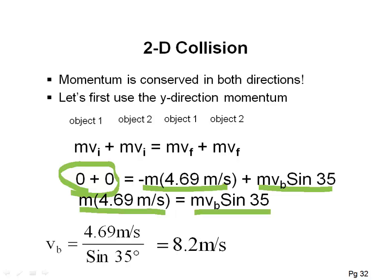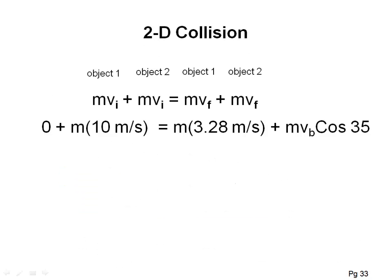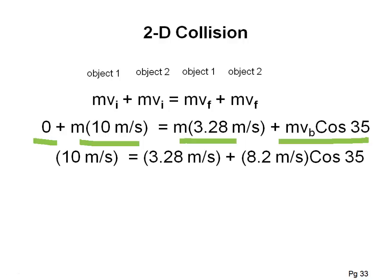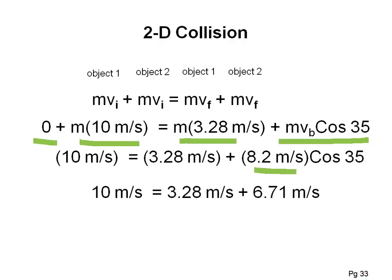You can also verify it works in the x direction: the green puck wasn't moving initially and the gray one was. Plugging in the new velocity of 8.2 m/s, the two sides of the x-direction momentum equation are equal, confirming conservation holds in both directions.